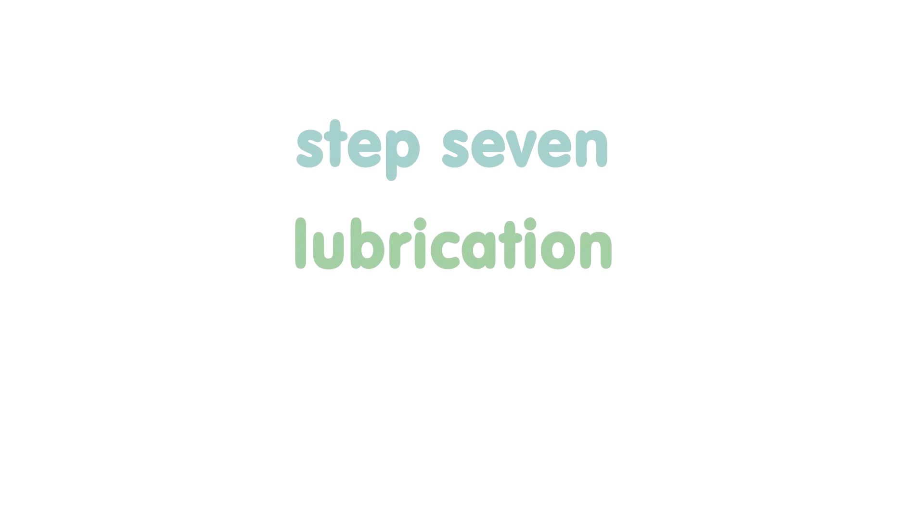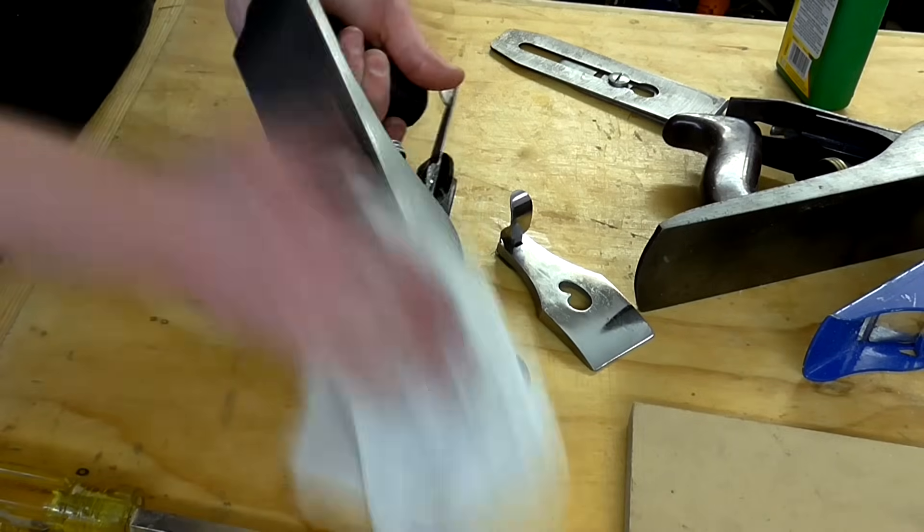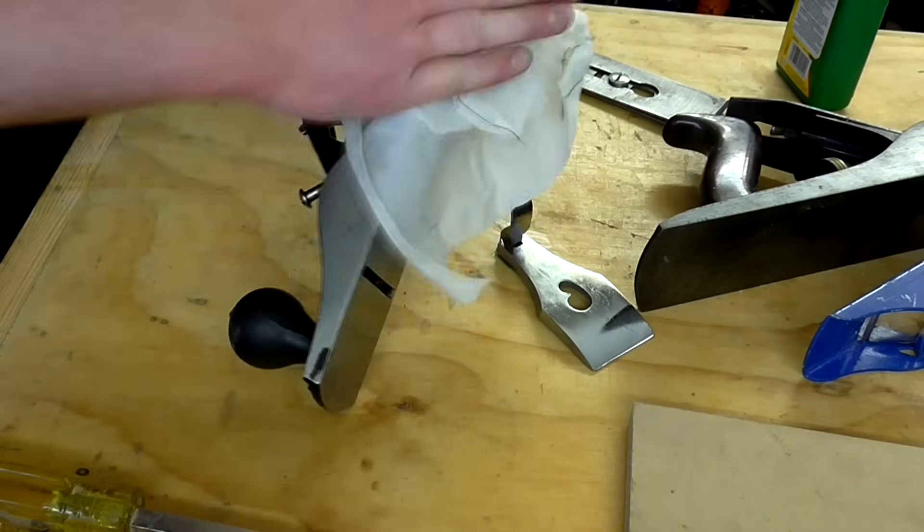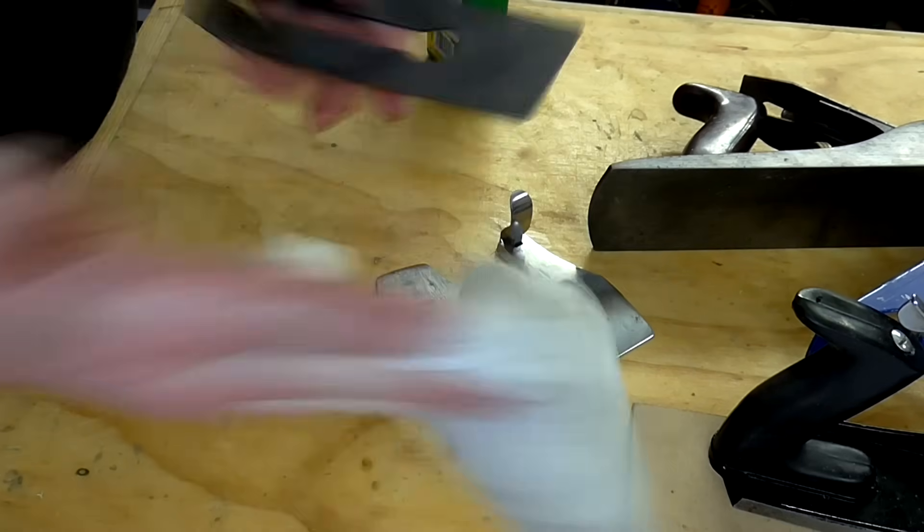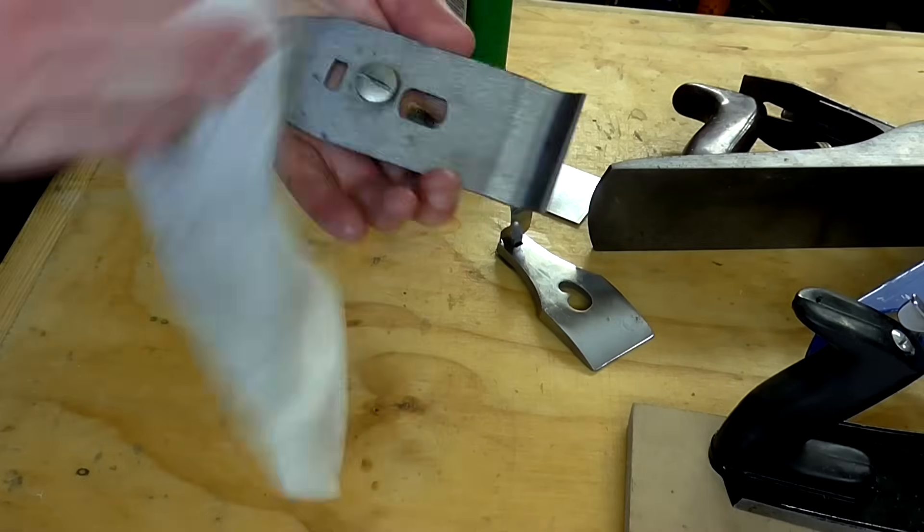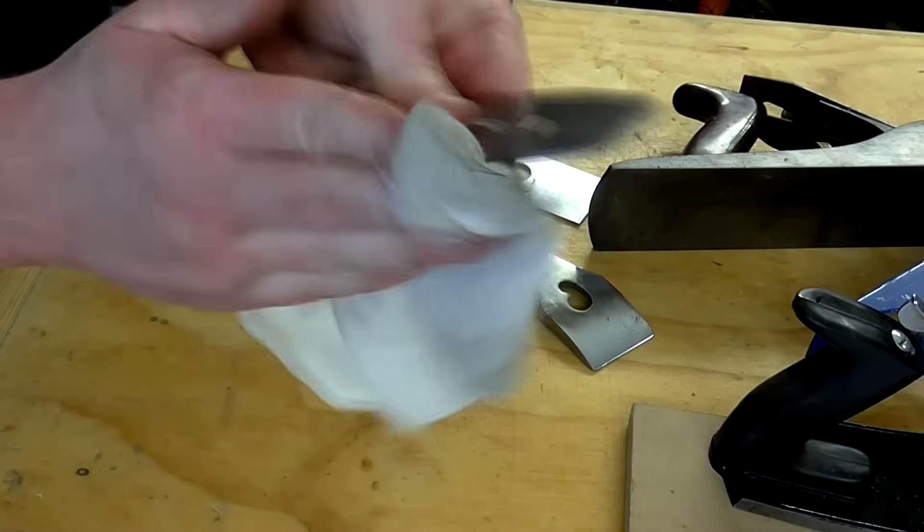Lubrication. This one is sometimes overlooked, but it makes planing so much easier. I regularly lubricate the sole of my plane between and during use. It makes the plane glide much easier and takes a lot less effort. It also protects the bare metal parts on the plane from rust. So I lubricate the sole of the plane, the sides, the cutting iron and the cap iron.